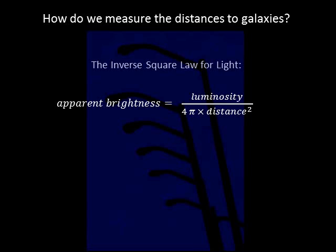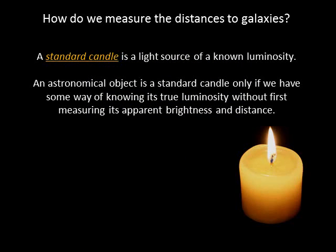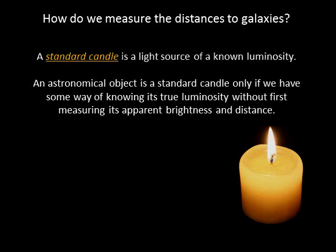We can use this technique to measure the distance to any object with a known luminosity. Astronomers call such objects standard candles. An astronomical object can be a standard candle only if we have some way of knowing its true luminosity. Unfortunately, most astronomical objects are not marked with a wattage label.